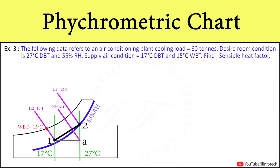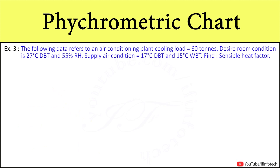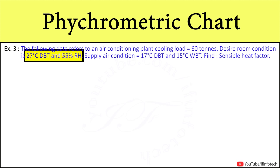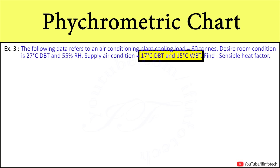Now we are going to the next numerical. The following data refers to an air conditioning plant with a cooling load of 60 tons. The desired room condition is 27°C dry bulb temperature and 55% relative humidity. The supply air condition is 17°C dry bulb temperature and 15°C wet bulb temperature. Find the sensible heat factor.